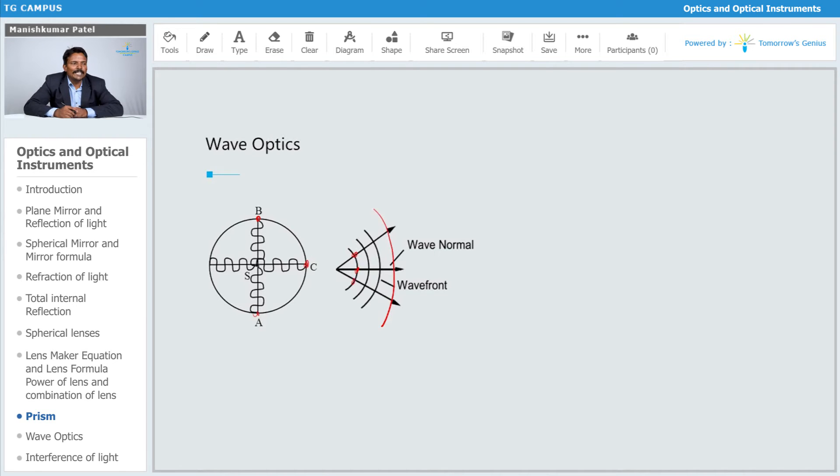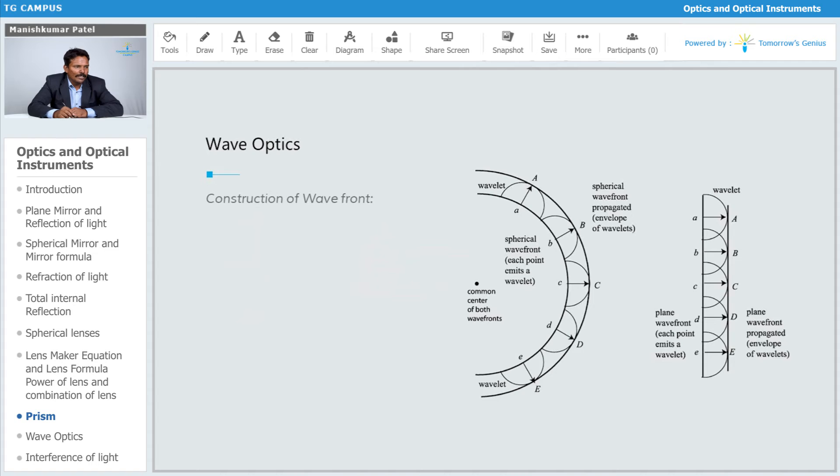Now what is that wave normal? The wave normal is perpendicular to wavefront. If you just draw that normal, which is perpendicular to that wavefront, we will call it as a wave normal. This is how we can draw it, or the construction of wavefront, how we are going to draw it exactly.